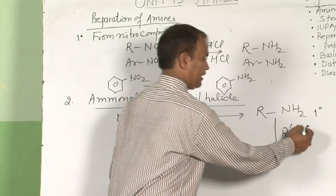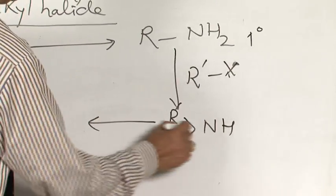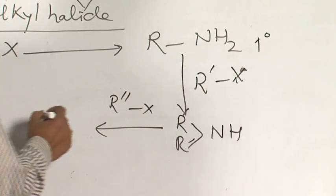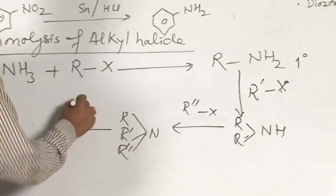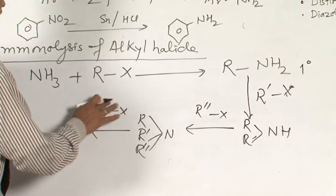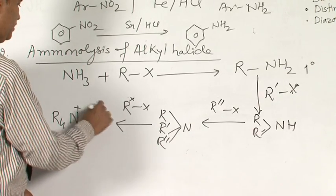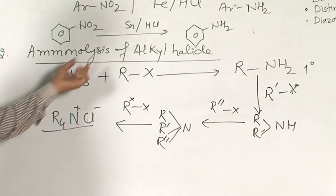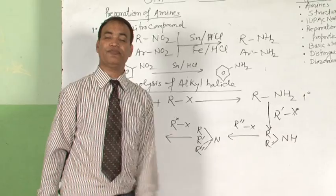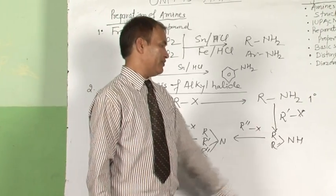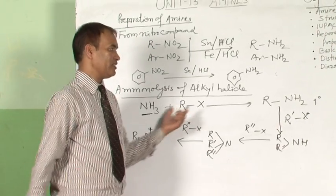Ammonia reacts with alkyl halide to give primary amine. Further, it reacts with alkyl halide to give secondary amine. Then further reaction gives tertiary amine. And again, it may react with alkyl halide to give quaternary ammonium salt. That is the demerit — we cannot get exclusively primary, secondary, or tertiary amine but a mixture. To get only primary amine, ammonia must be taken in excess.